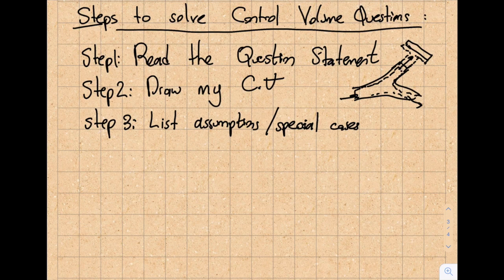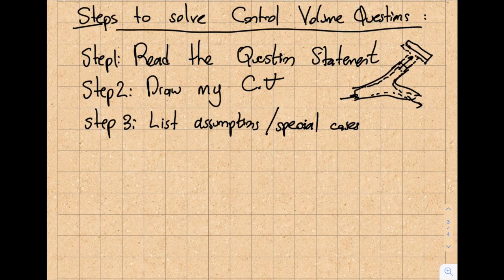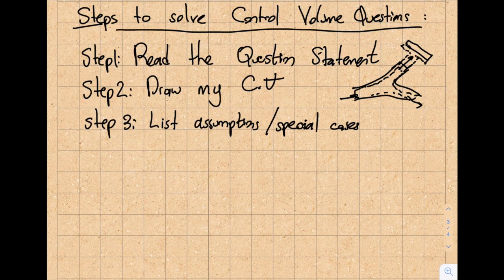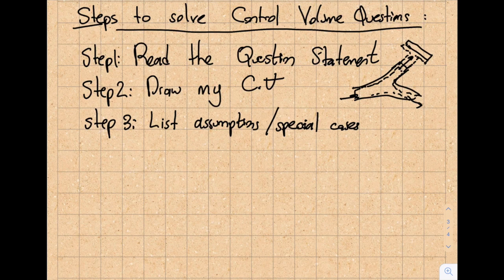Do I have uniform flow here? Or the velocity distribution is given to me? How about the weight? Can I just simply go ahead and neglect the weight of the control volume, right? How about the pressures? Is this a jet? Is this within a pipe? Is this an open channel? So there's a lot of things that you will have to consider over here.